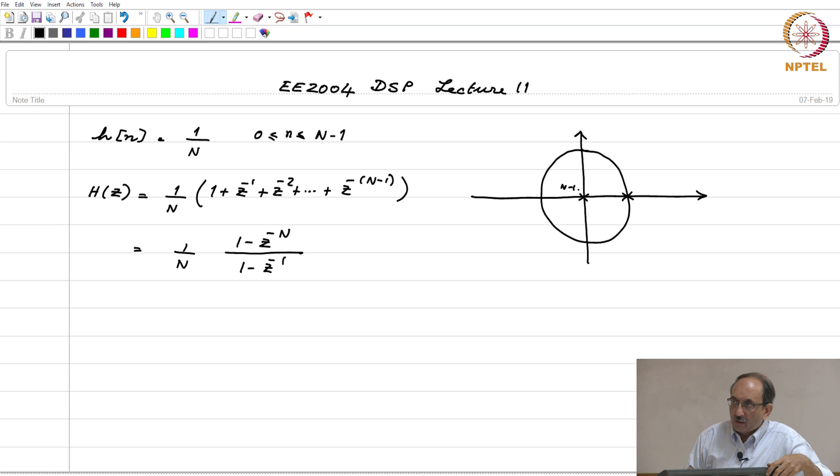The remaining roots are the zeros of the transfer function and they are the nth roots of unity. If you take as an example cap N equals 8, you will have 8 zeros distributed on the unit circle uniformly. Therefore, here you will have a zero at z equal to 1 and these are the remaining zeros.